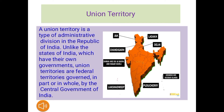Now we know about what is a Union Territory. A Union Territory is a type of administrative division in the Republic of India. Unlike the states of India, which have their own governments, Union Territories are federal territories governed in part or in whole by the Central Government of India.